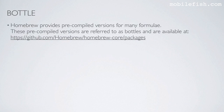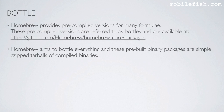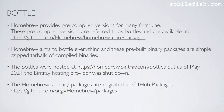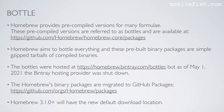Explaining the term bottle. Homebrew provides pre-compiled versions for many formulae. These pre-compiled versions are referred to as bottles and are available at this location. Homebrew aims to bottle everything, and these pre-built binary packages are simple gzip tar balls of compiled binaries. The bottles were previously hosted at this location, but as of May 1st, 2021, the Bintray hosting provider was shut down. Homebrew's binary packages were migrated to GitHub Packages at this location. Homebrew version 3.1.0 and up uses the new default download location.